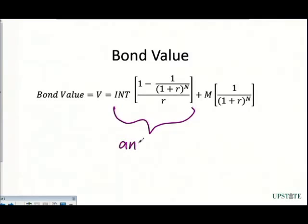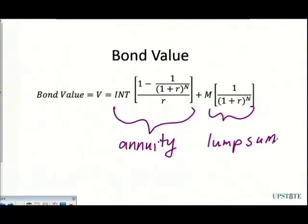This right here is the value of our annuity, and this right here is the value of a lump sum. Because what we're saying here is that we're going to have these bonds, these coupon bonds, which are going to pay out interest payments.